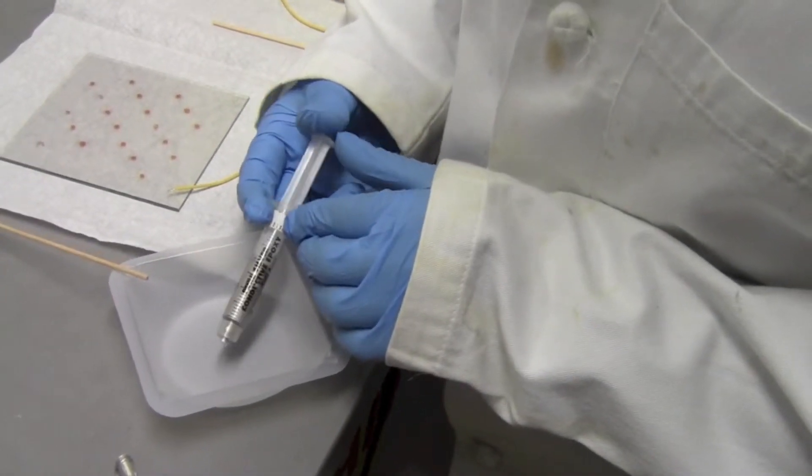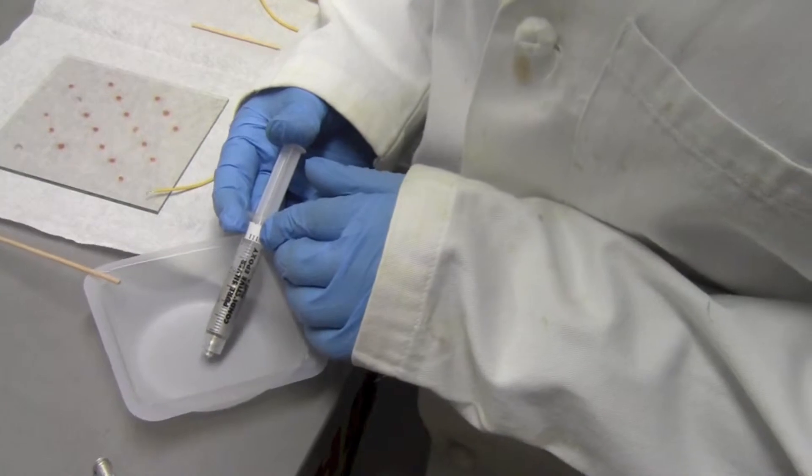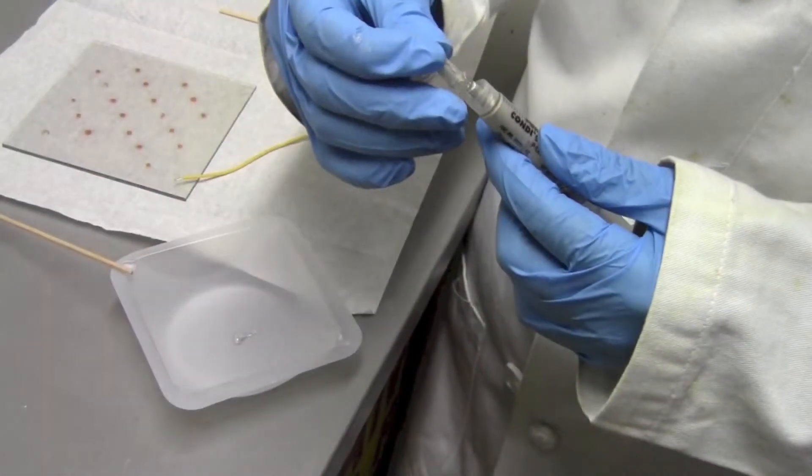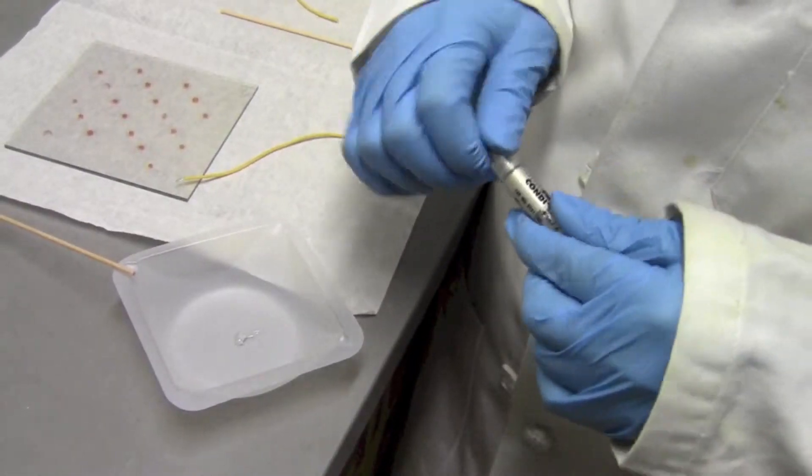To make the paste, you will need to mix equal parts epoxy A and B. Very little is needed because I will only be using a small amount to connect the wire to the plate.